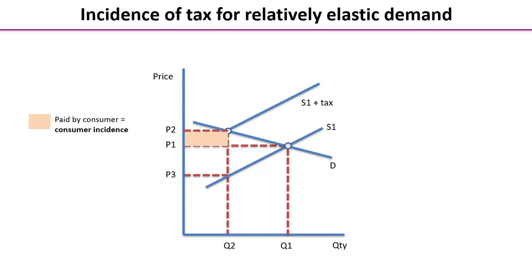Who pays the rest of the tax? It's going to be the supplier or the producer. That lower shaded green rectangle is the producer incidence, or the burden of tax on the producer. So the top box is the consumer incidence, the bottom box is the producer incidence, and both of those boxes combined is the total tax revenue.